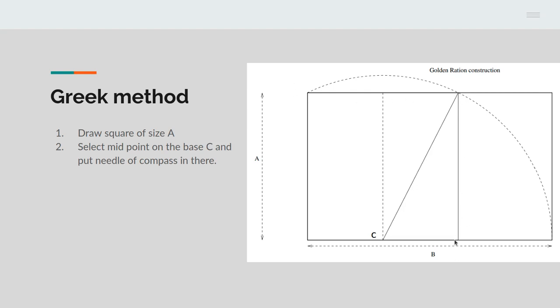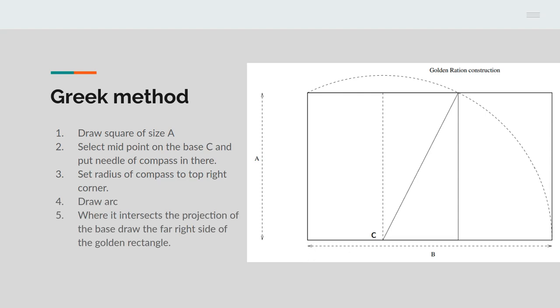Let's draw square A here. You select the midpoint on the base, call that C, and put the needle of your compass in there. You then set the radius of the compass to the top right-hand corner of the square. You then draw the arc, this arc here, and where the arc intersects the projection of the base, you'd put up the right-hand side of the golden rectangle. So the Greeks constructed the golden rectangle not by the Fibonacci series, but by the use of classical geometry, by the use of squares and compasses, the straight edge and the compass, the two basic tools of geometry.